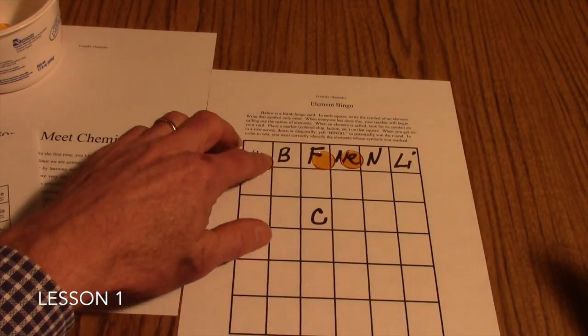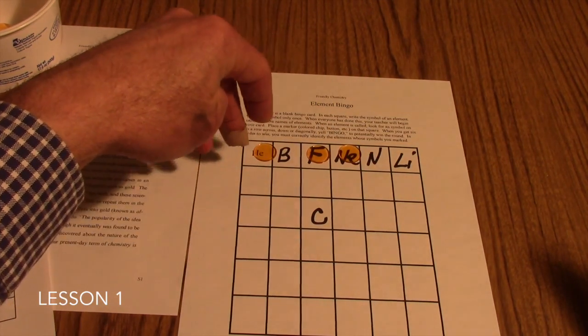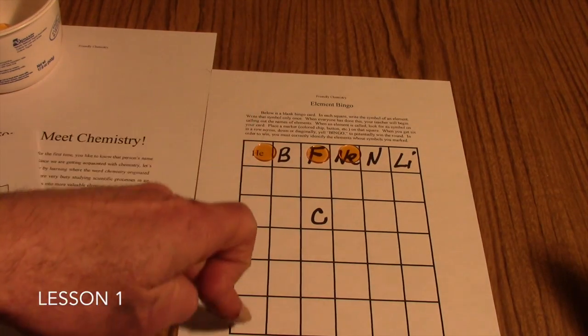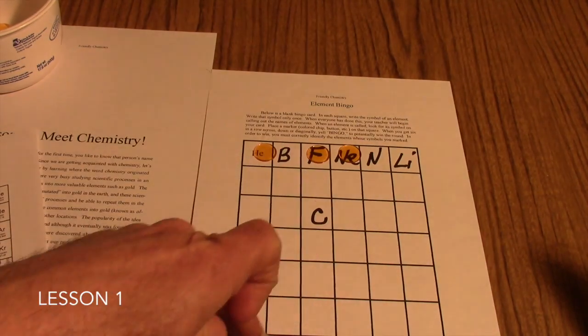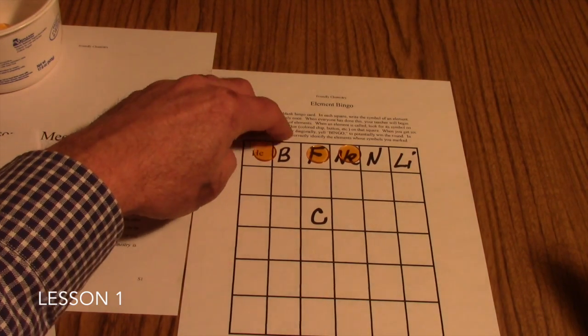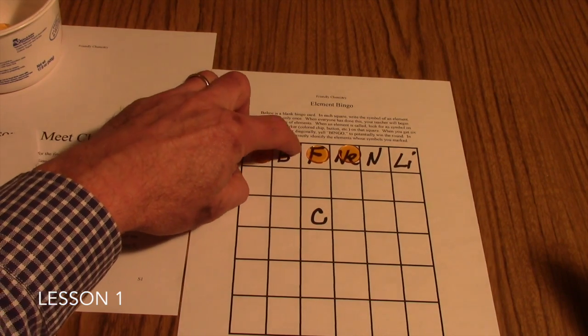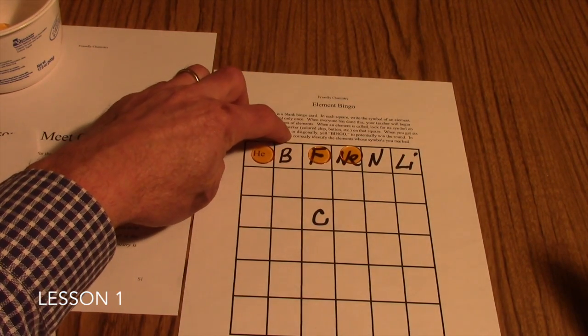You'll just keep calling out the symbols. Eventually a student will get six in a row across, six down, or six in a diagonal on the bingo card. Then they call out bingo. Before you award them the points or whatever you plan to do for a little reward for getting a bingo, ask the student to verify that bingo by telling you the symbol and then the element to which it belongs.